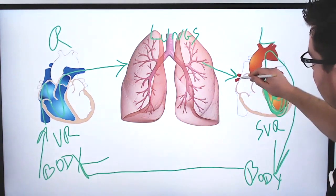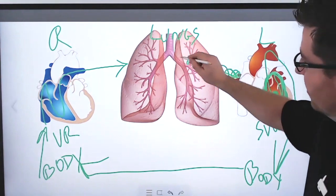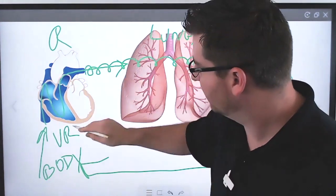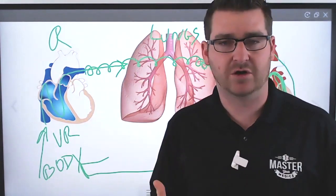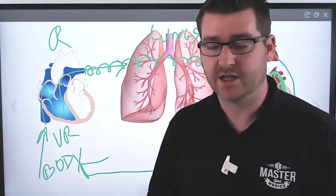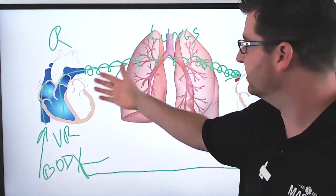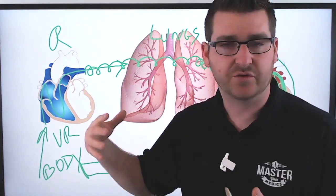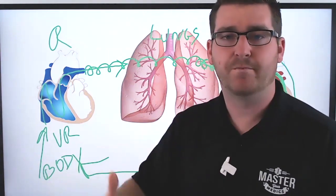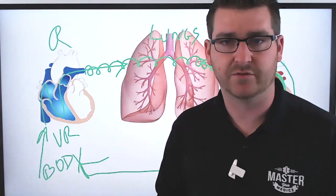That means traffic is going to back up through the lungs because the right side of the heart is still pumping like normal. It doesn't have any increased vascular resistance through the lungs, and so it's pushing the same amount of blood through.